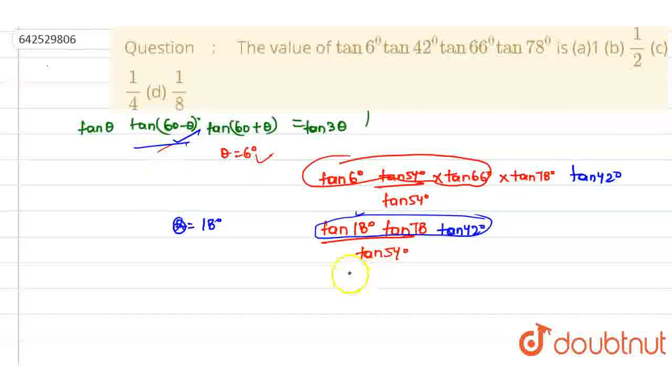So, it is nothing but tan 54° upon tan 54°. When I cancel it out, it comes up to be 1, so the correct option of this question is option number A, that is 1. Thank you.